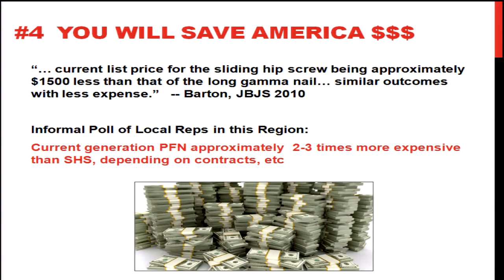You will also save America money. The current list price for the sliding hip screw is approximately $1,500 less than that of the long gamma nail, and it shows similar outcomes with less expense. In an informal polling of reps in the area, all five companies confirmed that in this region their sliding hip screw is approximately two to three times cheaper than their intramedullary device.